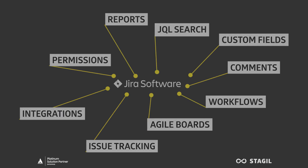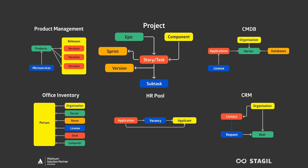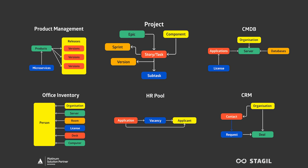Stagyl Assets expands on the native Jira linking functionality, going from the classic project, epic, task, and subtask structure to a completely custom data model, while inheriting and preserving native hierarchical dependencies between assets.